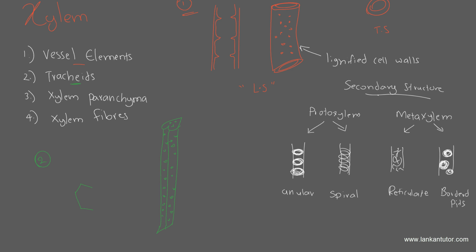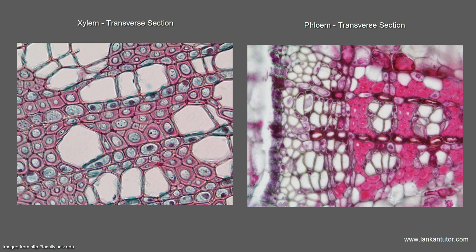Tracheids, unlike other parts of the xylem, are found in all vascular plants. They are elongated cells with lateral tapering ends. The cross walls of the tracheids are extremely perforated, meaning they have holes throughout. The cell walls are lignified, making them dead cells with empty lumens. When these cells mature, you can see pits in the walls. In cross section, it is a polygonal structure. The main function of tracheids is to transport water, which moves from one tracheid to another through the large number of pores.